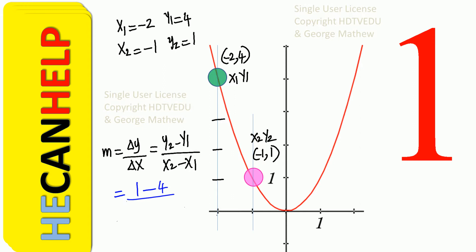Y1 is 4. X2 is negative 1. X1 is negative 2. And 1 minus 4 is negative 3. At the top we get negative 3. At the bottom we get negative 1 plus 2, positive 1. So negative 3 over 1, and that is negative 3.